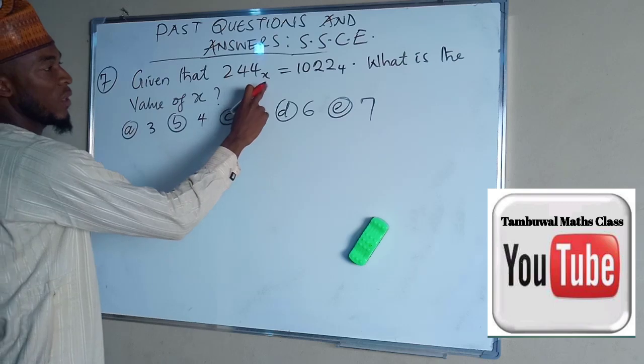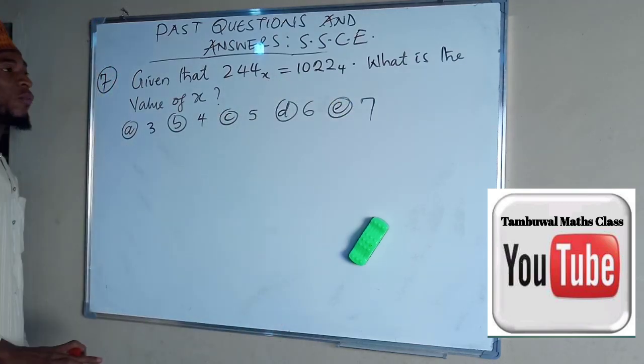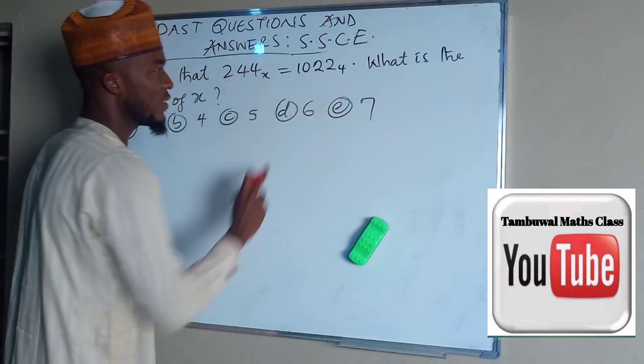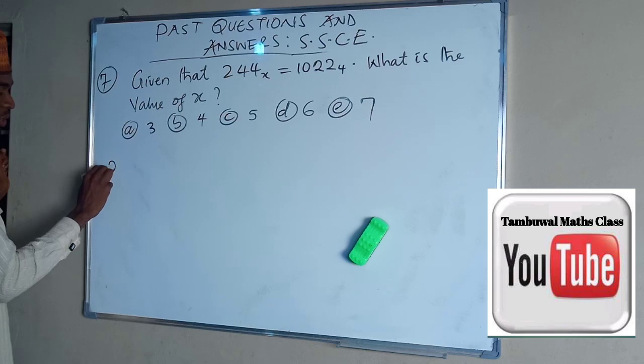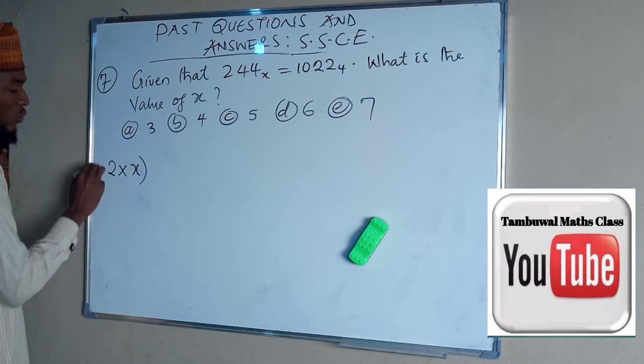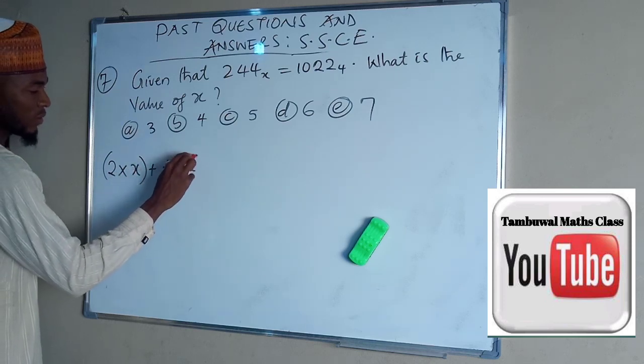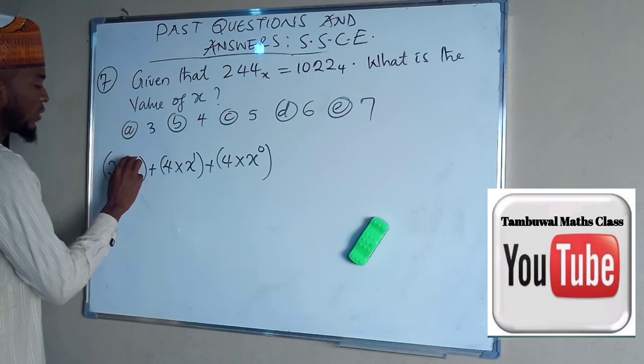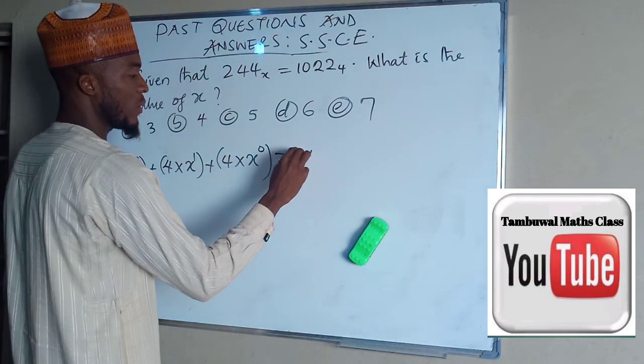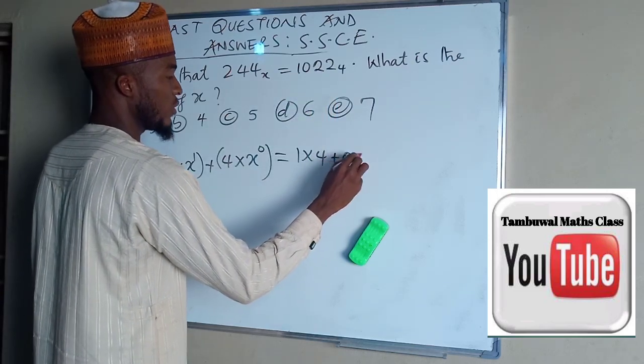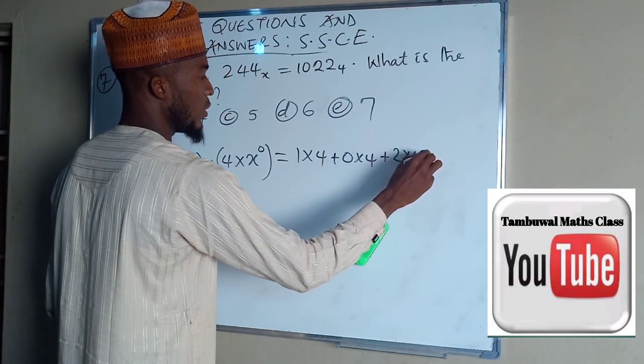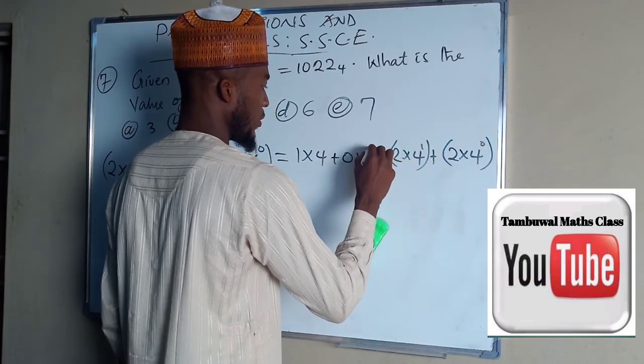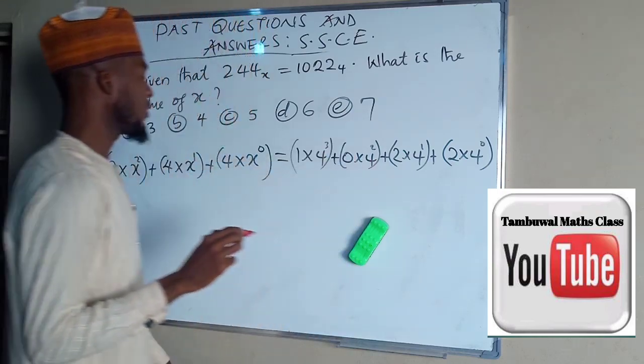Given that 244 base x equals 1022 base 4, what is the value of x? These are the available options given to us. So for x, we need to transform each one of these into base 10. So we start with the very first one, which is 2 times the x number, which we don't know, plus 4 times x plus 4 times x. Then you assign the index from 0, 1, 2. And this is the same thing as 1 times 4, on the right-hand side, plus 0 times 4, plus 2 times 4, plus 2 times 4. Index from 0, 1, 2, 3.